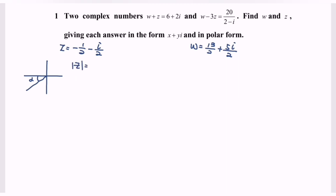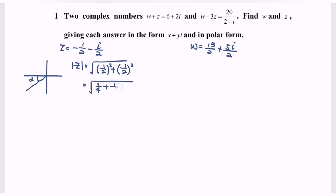To find the modulus of z, we use the formula square root of a squared plus b squared. With a equals negative 1 over 2 and b equals negative 1 over 2, we get square root of (1 over 4 plus 1 over 4), which equals square root of 2 over 4, or square root of 1 over 2, which simplifies to 1 over square root of 2.